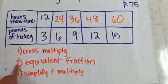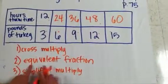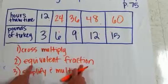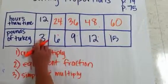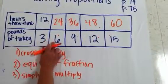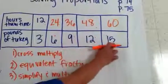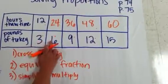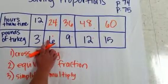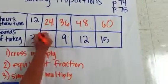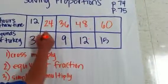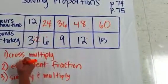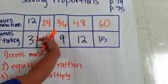Method 2 is equivalent fractions. I can turn these into equivalent fractions by saying: 3 times what is 6? Well, 3 times 2 is 6. So since I'm multiplying,